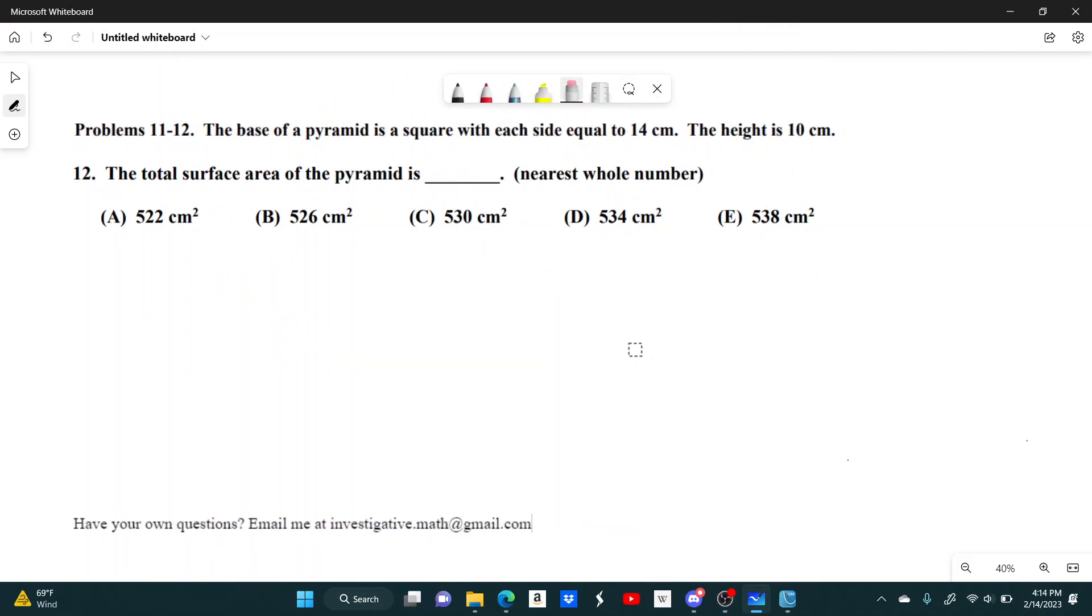Number 12. The total surface area of the pyramid is what? It tells us the base of the pyramid is a square with each side equal to 14 centimeters and a height of 10 centimeters.